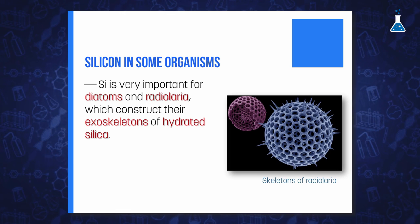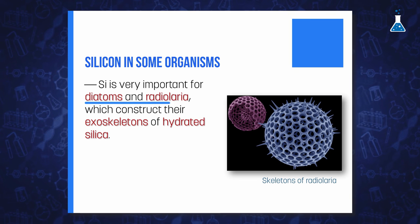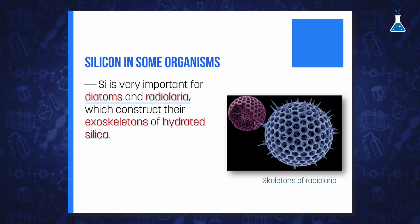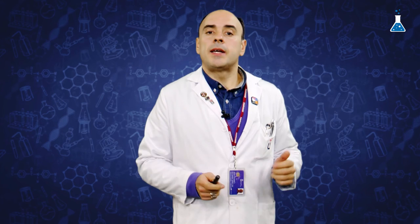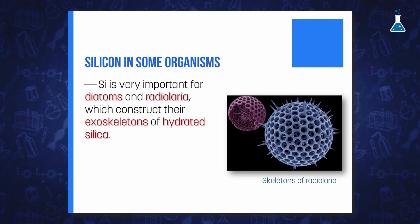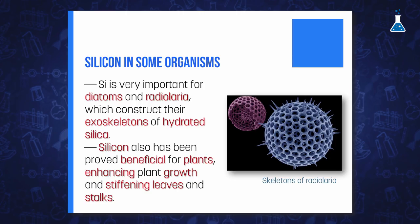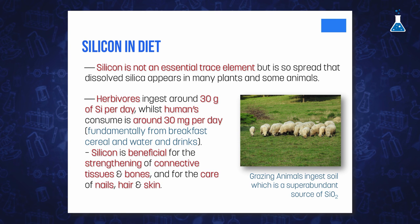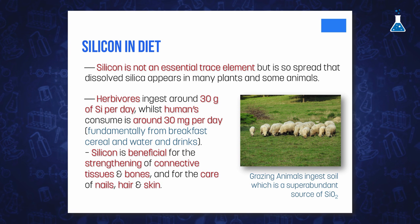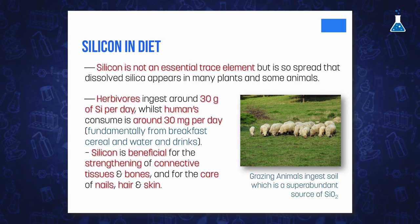Silicon is very important for some marine organisms such as diatoms and radiolaria, which construct their exoskeletons of hydrated silica obtained from dissolved silica or silicic acid in seawater. Silicon has also been proven beneficial for plants, enhancing growth and stiffening leaves and stalks. Herbivores ingest a considerable amount of silica, around 30 grams per day, while human consumption is around 30 mg per day, fundamentally from breakfast cereal, water, and drinks. Silicon seems beneficial for strengthening connective tissue and bones, and is also useful for the care of nails, hair, and skin.